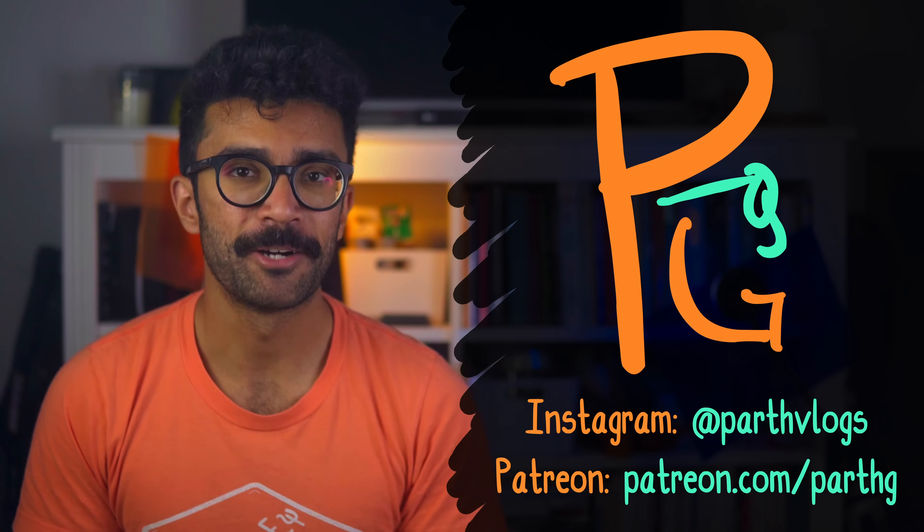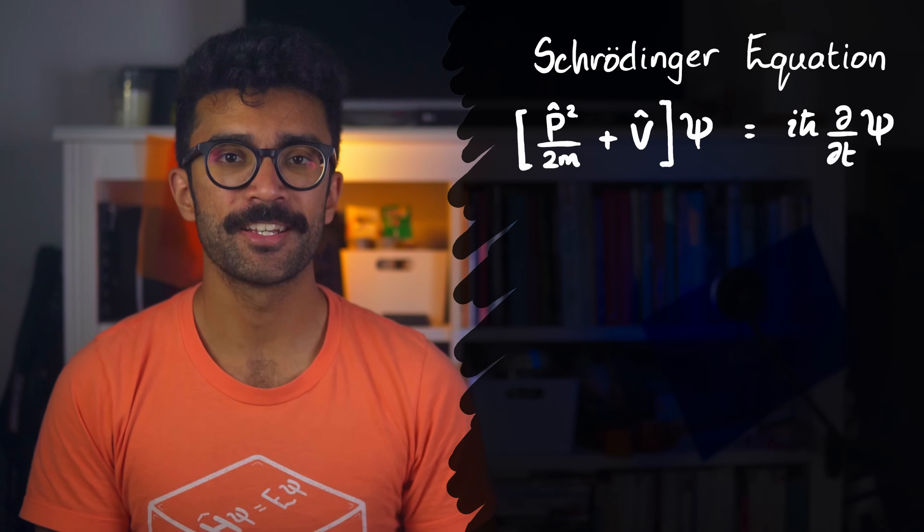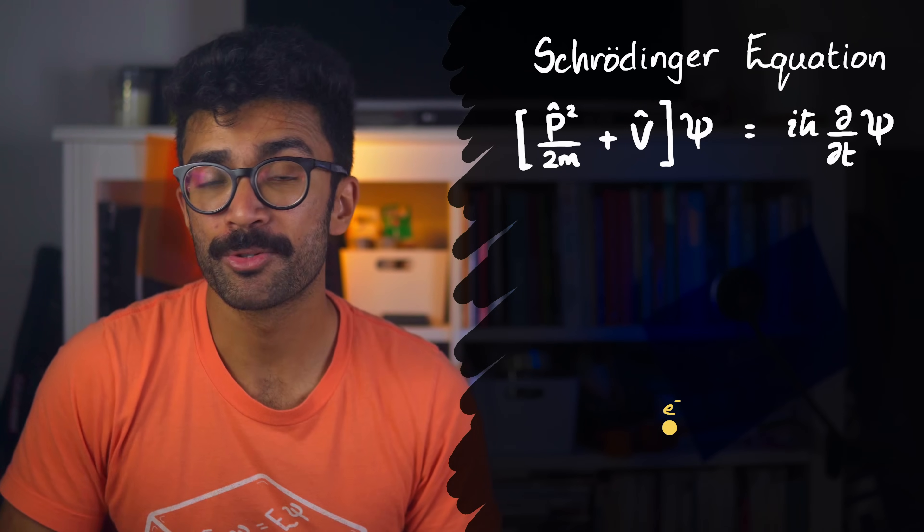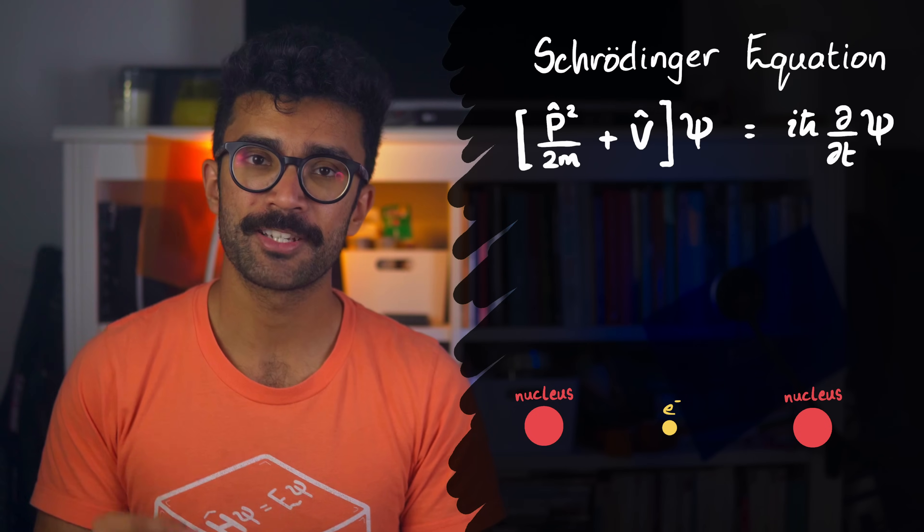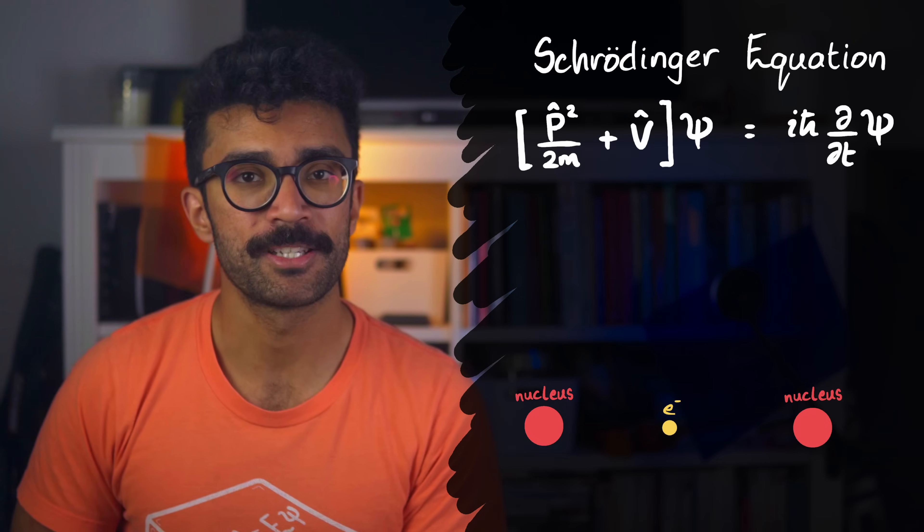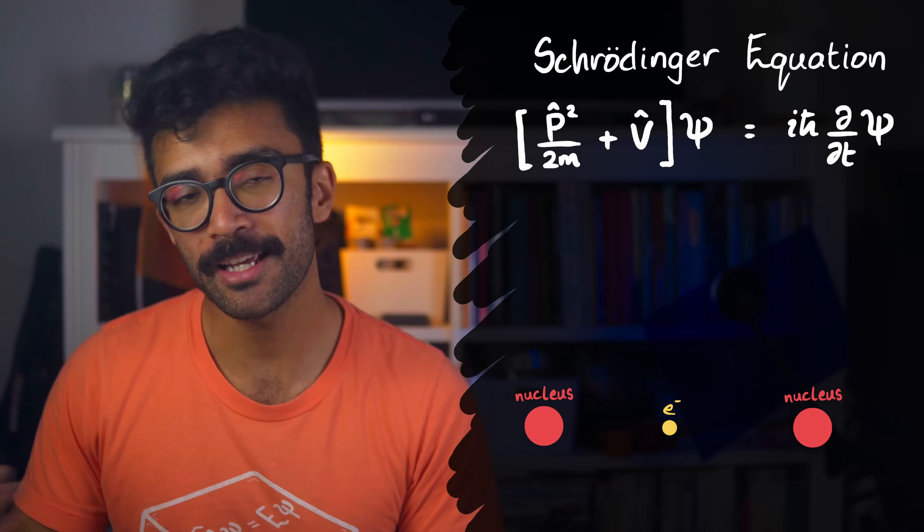First of all, let's talk a bit about the Schrödinger equation and what it tells us. Let's say we're studying a simple system, such as a single electron, maybe in between two nuclei that are very far apart from each other. The Schrödinger equation allows us to plug in information about our system, such as the fact that we're studying an electron between two nuclei that we're assuming to be stationary in this case.